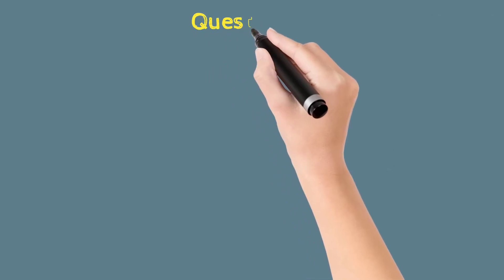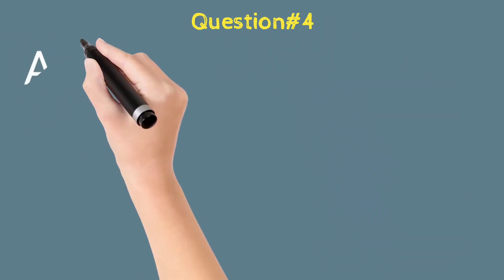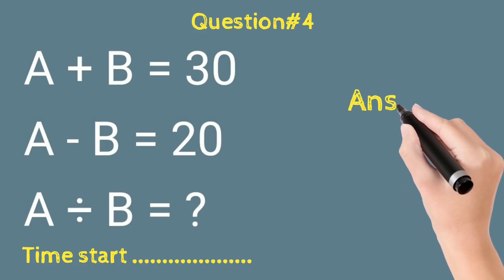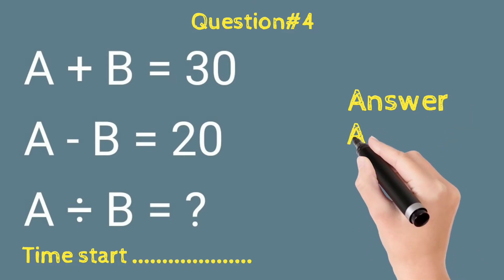And the next question is: A plus B equals 30, A minus B equals 20, so A divided by B equals what? Your time already starts. And time's up! And the answer will be 5.